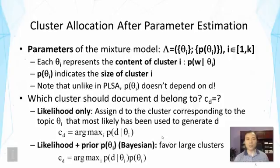So after we have estimated parameters, how can we then allocate clusters to the documents? Well, let's take a look at this situation more closely. So we just repeated the parameters here for this mixture model. Now, if you think about what we can get by estimating such a model, we can actually get more information than what we need for doing clustering, right? So theta i, for example, represents the content of cluster i. This is actually a byproduct. It can help us summarize what the cluster is about.